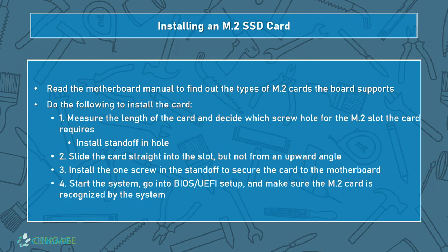For installing an SSD, make sure the board supports the type of card you have. Measure the length of the card and decide which screw hole it will go into. Install the standoff so it lines up correctly, then slide the card straight into the slot — not from an upward angle, as that can damage the connectors. Once slotted, install the screw and make sure the M.2 card is recognized by firmware.